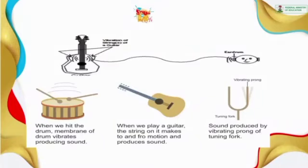For example, consider a guitar. If someone is playing a guitar, you can hear that someone is playing a guitar. When we hear the drums, the membrane of the drum vibrates producing sound. When we play guitar, the strings on it make a to-and-fro motion and produce sound. Sound is also produced by the vibrating prongs of a tuning fork. So sound is always propagated through a medium.